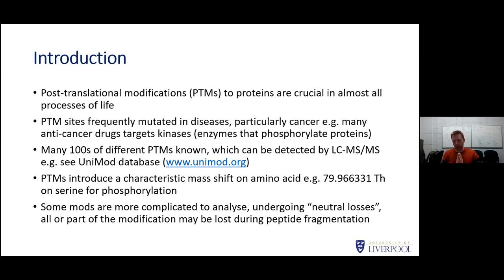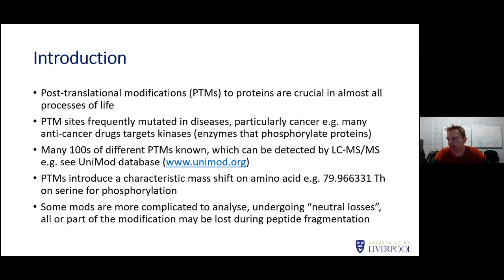There are vast amounts of research and lots of great useful databases. There are many hundreds of PTMs known. One of the most useful databases in the mass spectrometry context is Unimod, which lists all of the known PTMs that can be measured by mass spectrometry, as well as lots of chemical artifacts and other modifications. In the mass spectrometry context, we tend to think of PTMs in terms of a mass shift on an amino acid — phosphorylation causes a mass shift of just under 80 Daltons on serine residues, for example.